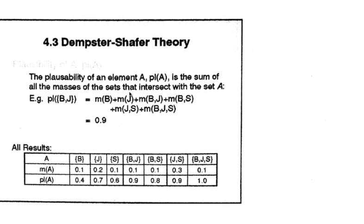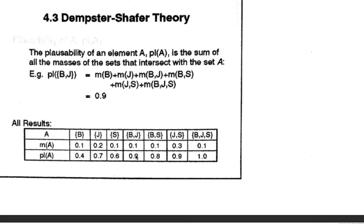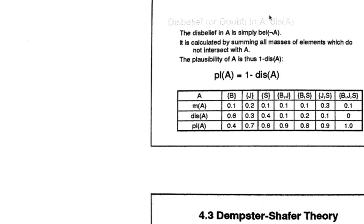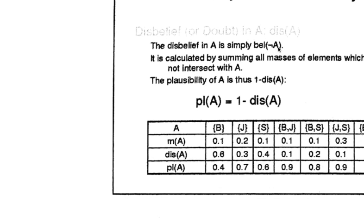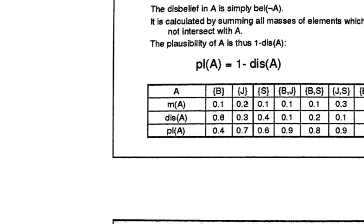Plausibility of an element is the sum of the masses of sets that intersect with set A. All the subsets that are intersecting with BJ come into the plausibility of BJ — so M(B), M(J), M(BJ), and also M(BS), M(JS), and M(BJS), because B intersects. That comes out to 0.9. Disbelief is simply the belief of not-A, calculated by summing all masses of elements which do not intersect with A. And plausibility of A is thus 1 minus disbelief of A.